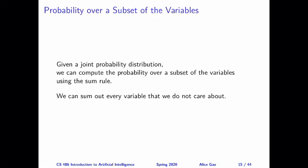We want to calculate the probability over a subset of the variables using the joint distribution, and the rule that we can use is called the sum rule. The idea of the sum rule says that if we only care about a subset of the variables, then we can simply sum out every variable that we do not care about. Let me show you a couple of examples to illustrate this.